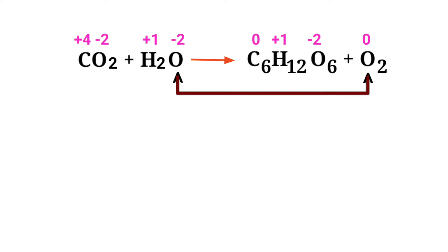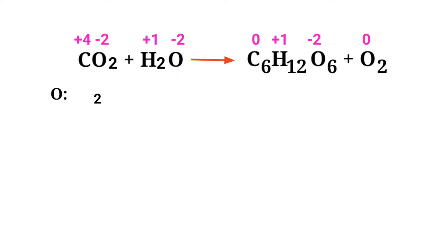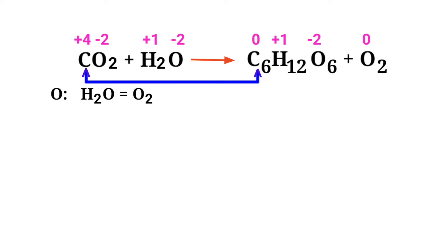First, figure out the reducing and oxidizing agents by assigning oxidation numbers. In this equation, oxygen has a charge of minus 2 and it is changing to 0, so oxygen is being oxidized. Carbon has a charge of plus 4 and it is changing to 0, so carbon is being reduced.